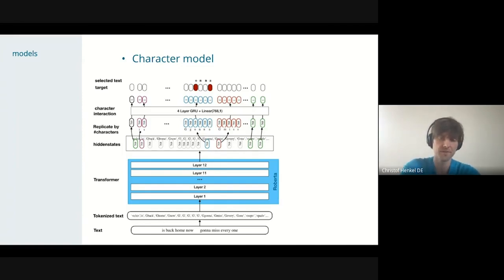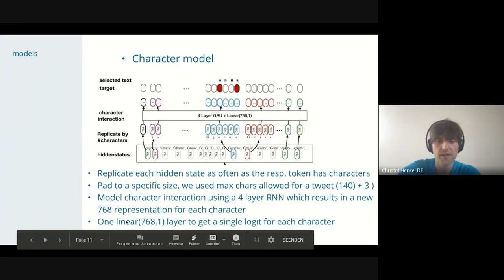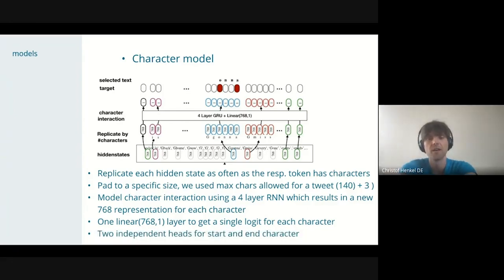So it was quite one solution, and my model is based on that, is to enable the model somehow to predict on a character level. And I thought about many ways how to do that. And the first one that came to my mind is to replicate each hidden representation for each token as often as the token has characters, so that I get a character-based representation. So I replicate each hidden state as often as the original token had characters. And then all these representations have equal values at this point. So I need to model again interaction between the characters. And I do that by having a four-layer RNN network, and then project that with the last linear layer down to a single logit, which enables to predict the start and the end token. When you replicate the characters, of course, you will have a bigger size than just by the tokens. Luckily, the data was based on tweets, and the tweets have a character limit. So we also use the same character limit as a maximum length for our character predictions. And what I also had not mentioned yet is that I had two parallel heads for the start character and the end character.